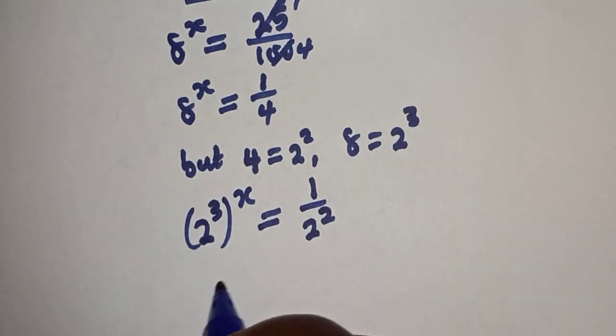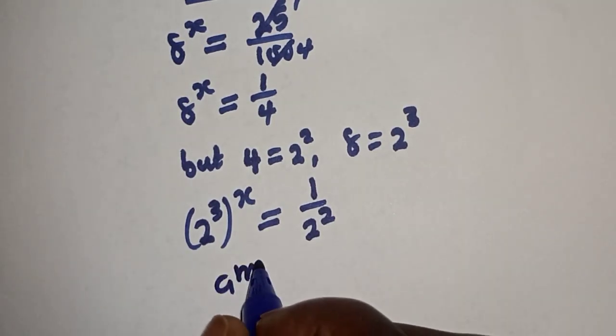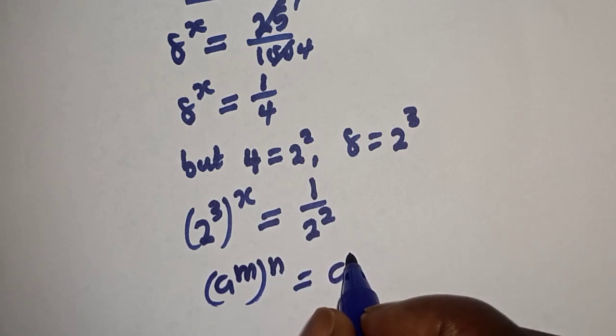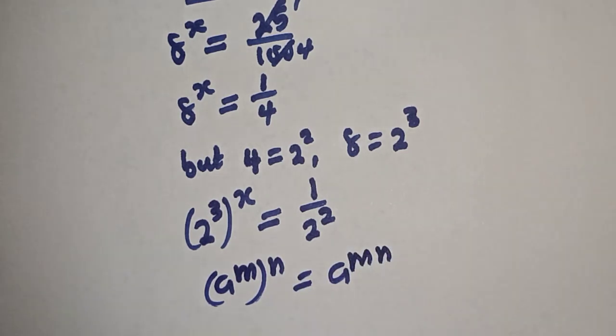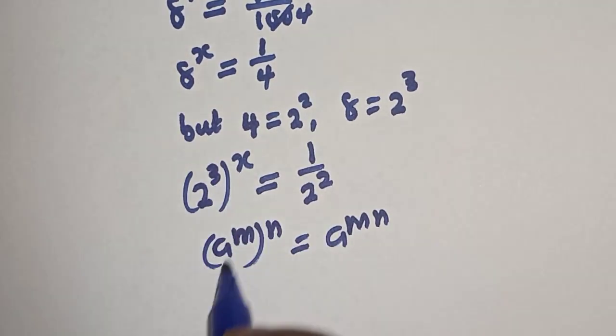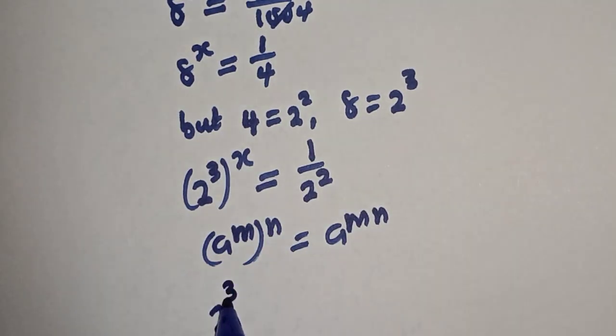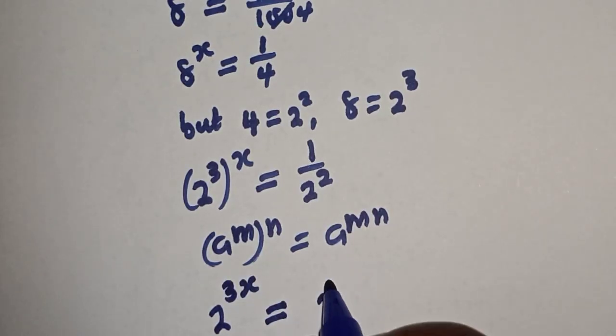Take note of this rule that a raised to power m raised to power n is equal to a raised to power mn. And from here we have 2 raised to power 3 times x, which is 3x, is equal to 2 raised to power minus 2.